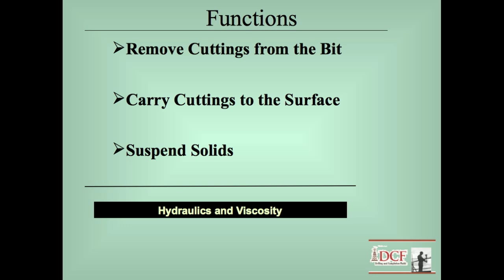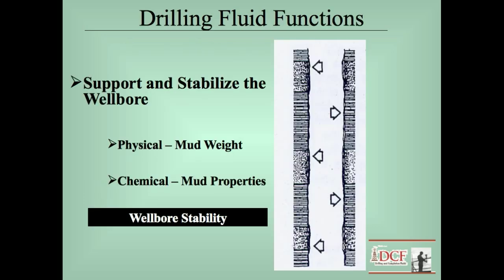Of equal importance to controlling pressure is cuttings removal. Circulating the mud is necessary to move the cuttings away from the bit and up and out of the hole. The mud also has to suspend these solids and the weight material when circulation stops. This is a function of the viscosity of the mud, while controlling pressures is a function of the mud weight. Mud weight is also needed to support the wellbore to stop it from collapsing — wellbore stability. In addition, the chemistry of the mud, primarily whether it is oil or water based, is of prime importance for maintaining wellbore stability.